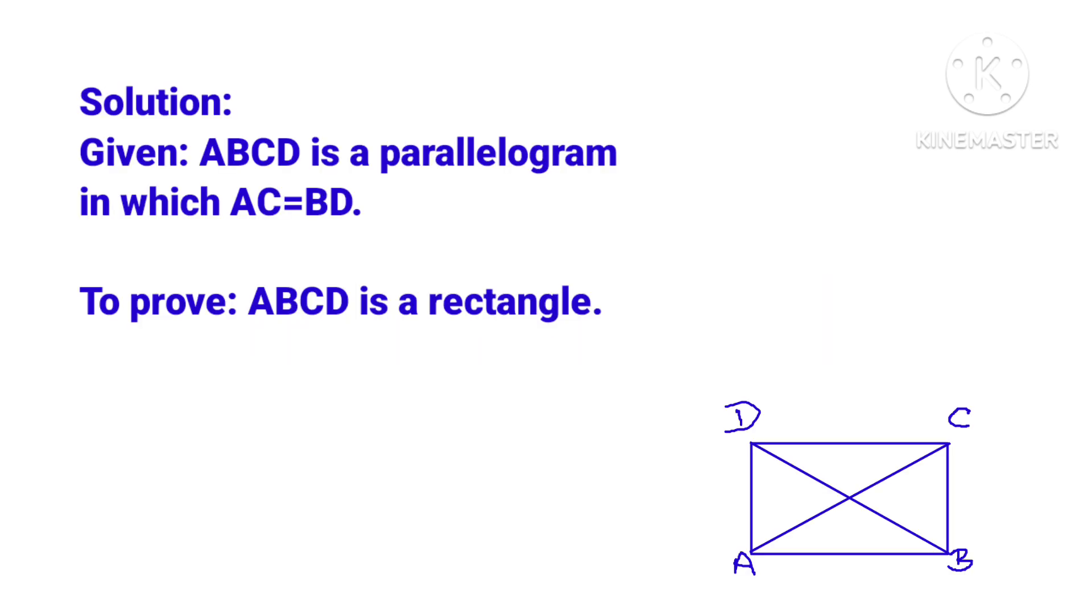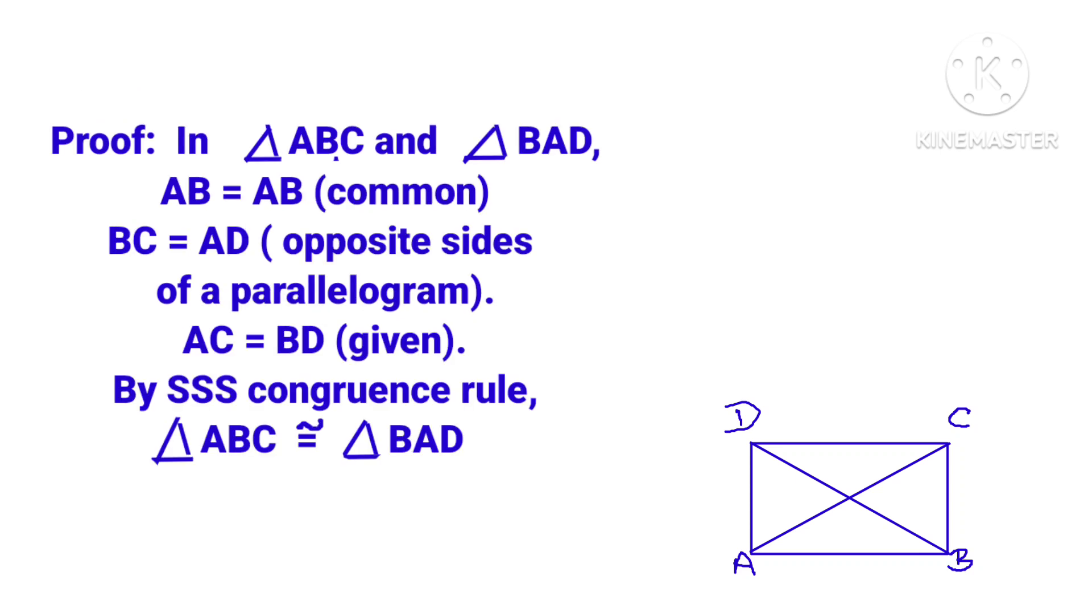Given: ABCD is a parallelogram in which AC is equal to BD. AC and BD are diagonals. To prove: ABCD is a rectangle. Proof.